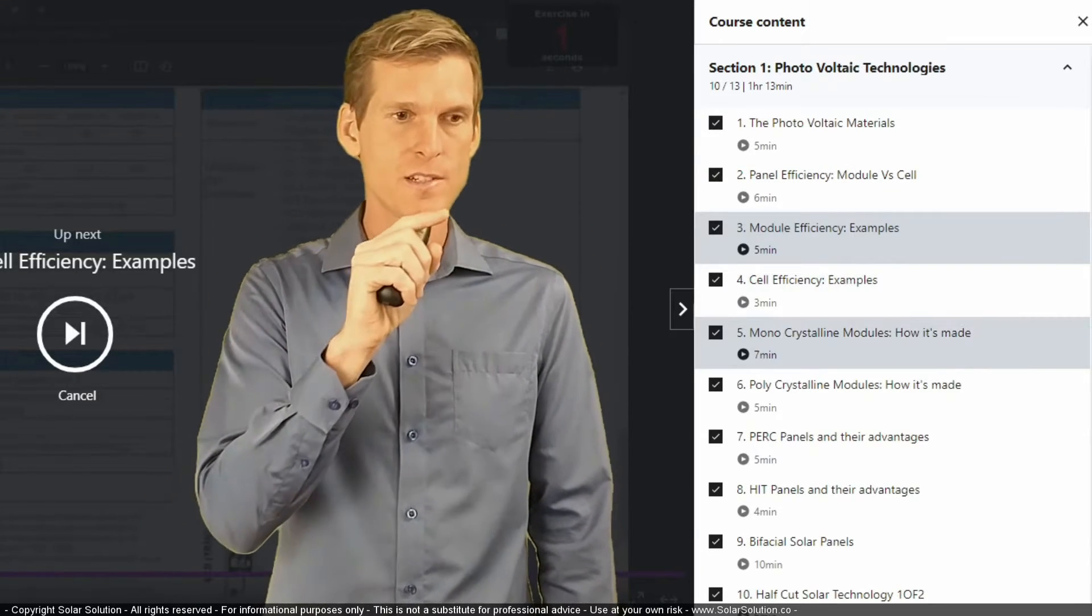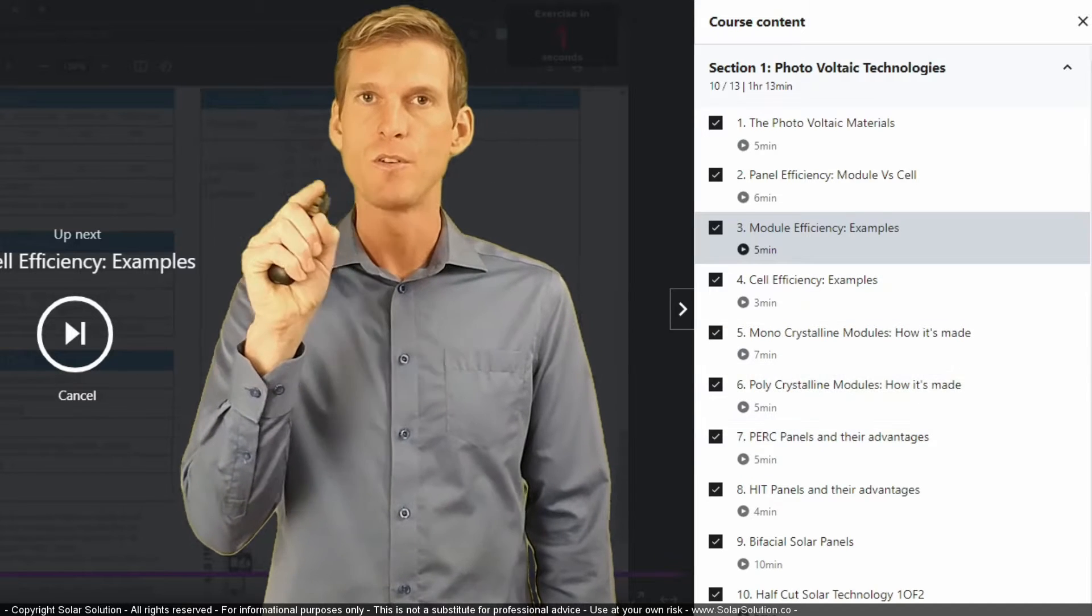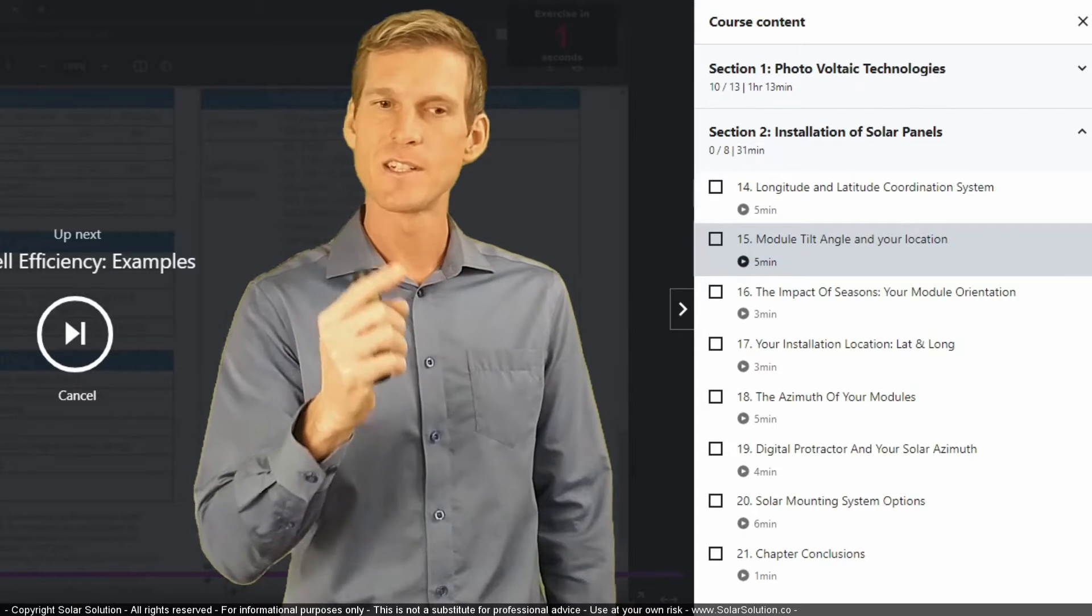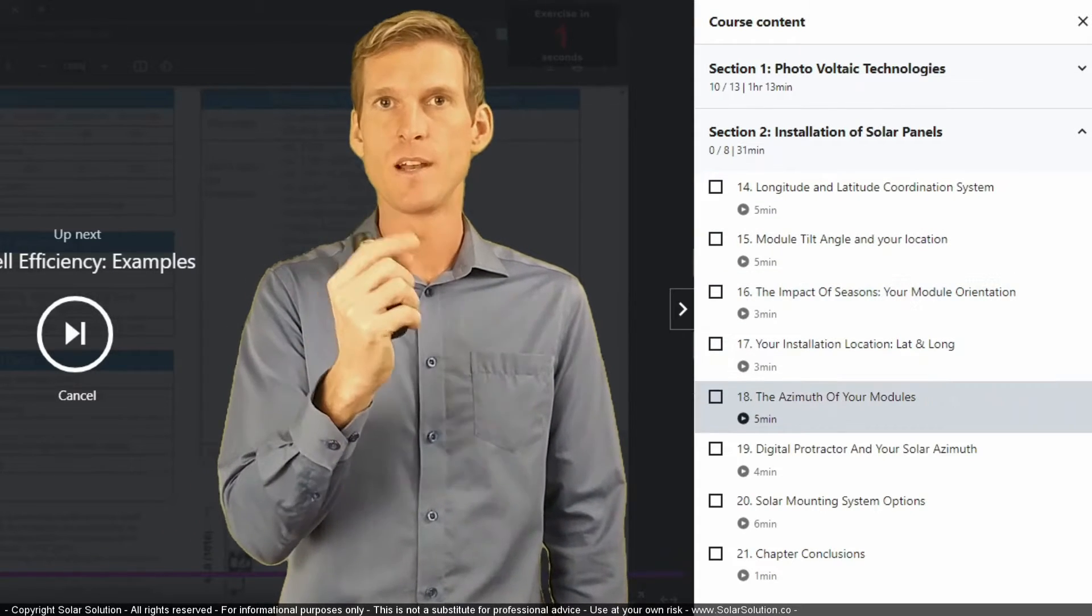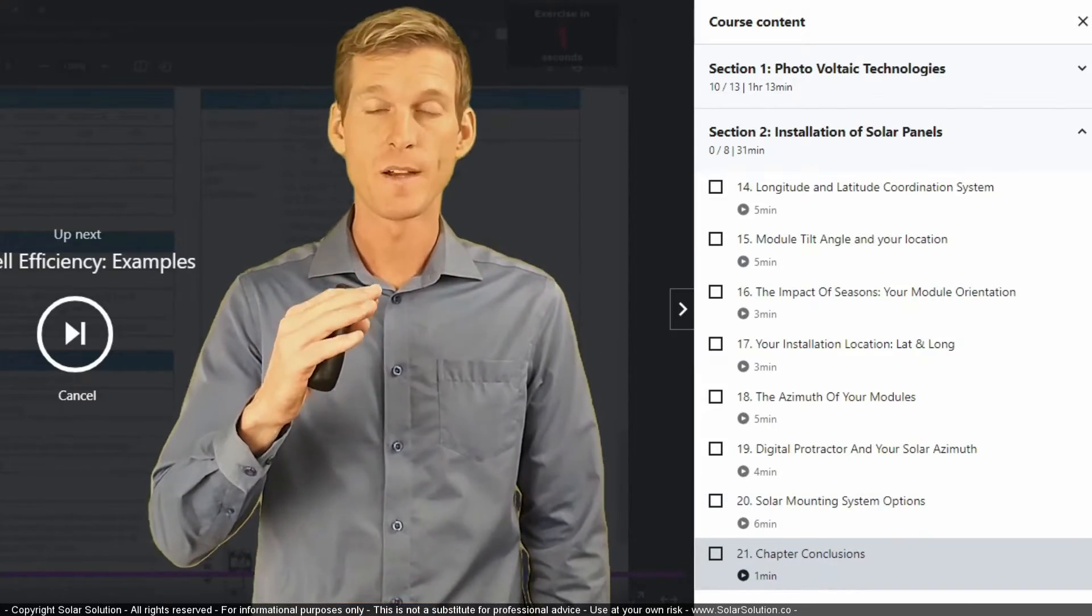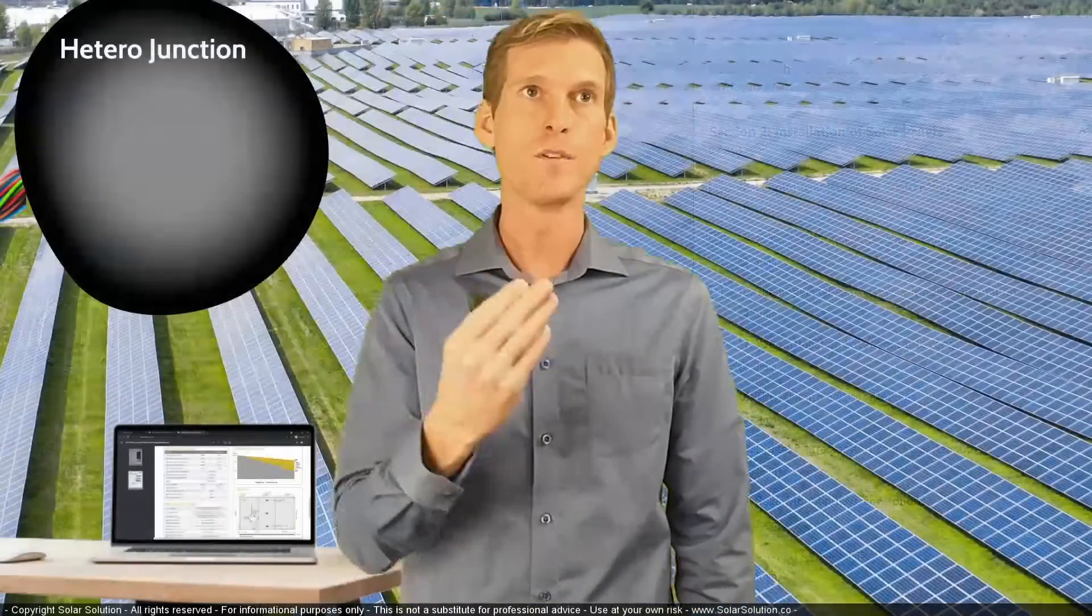You can start at the beginning of the course and just follow it A to Z, or you can select which mini topics you want to learn about. If you come across topics you're less interested in, you can just skip the video lesson and go straight to the next mini topic.